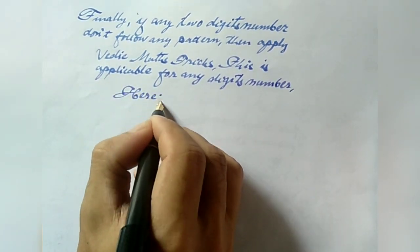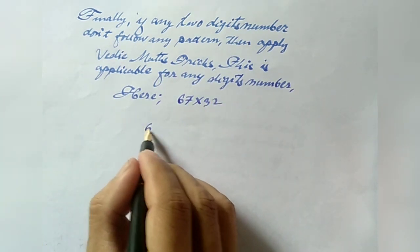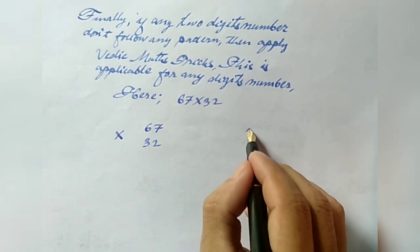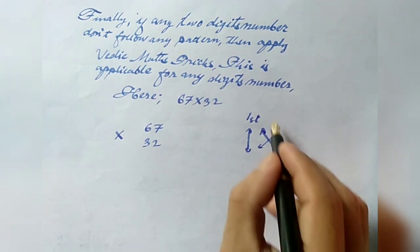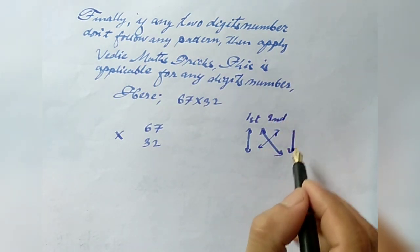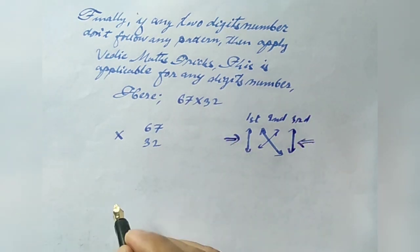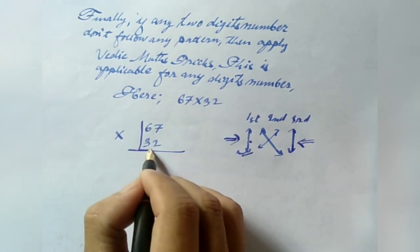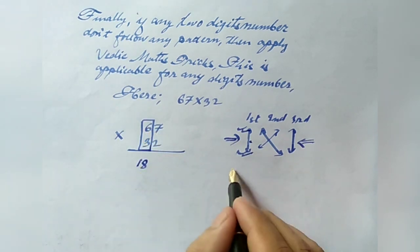Let us take an example of 67 into 32. Let us write 67, 32. Let us follow some tricks. This will be our first part, and crossing, this will be our second part, and similarly we will do the arrow, that is like the third part. Now it can start from either side, from left side or right side, no matter. So let us draw the line of this first part, and let us draw one rectangular box of 6 and 3. We get 6 into 3 is 18. First part is over. Now let's do crossing, that is the second part.